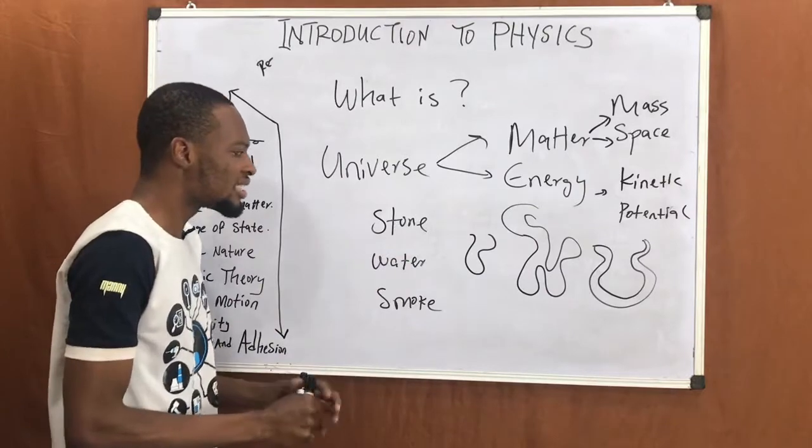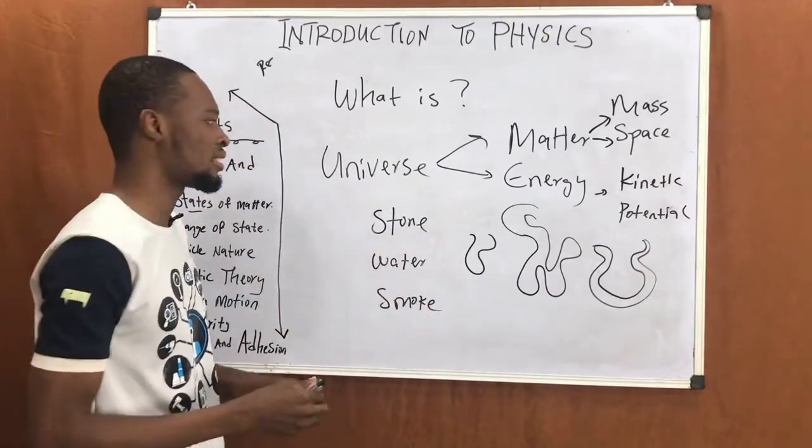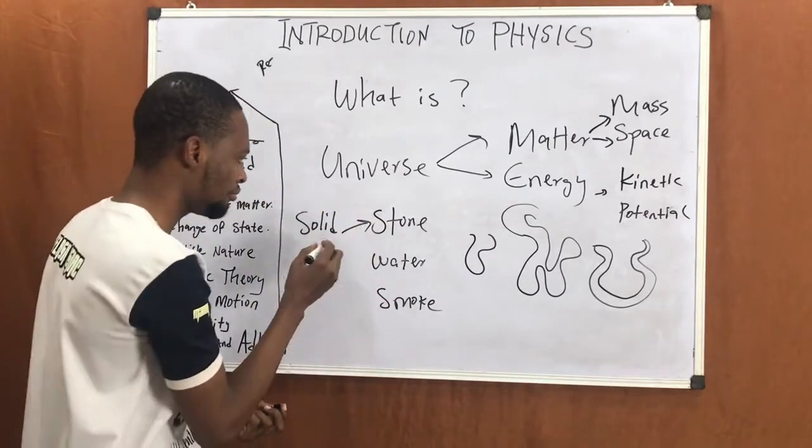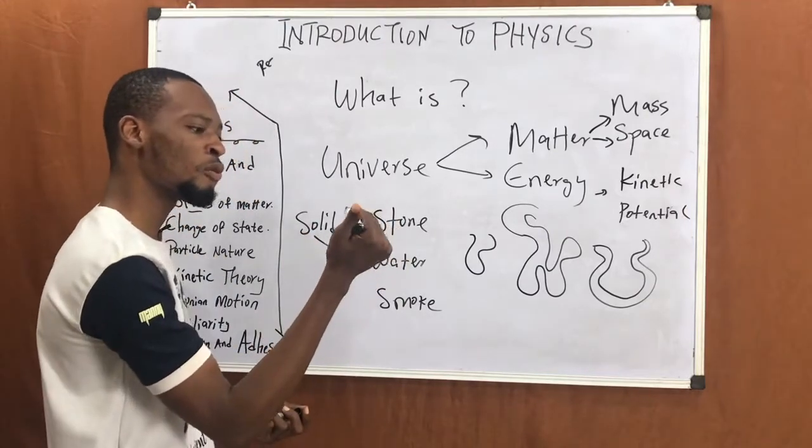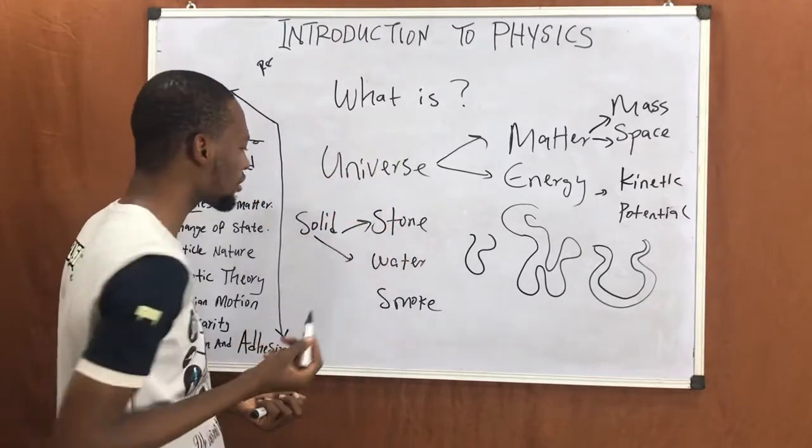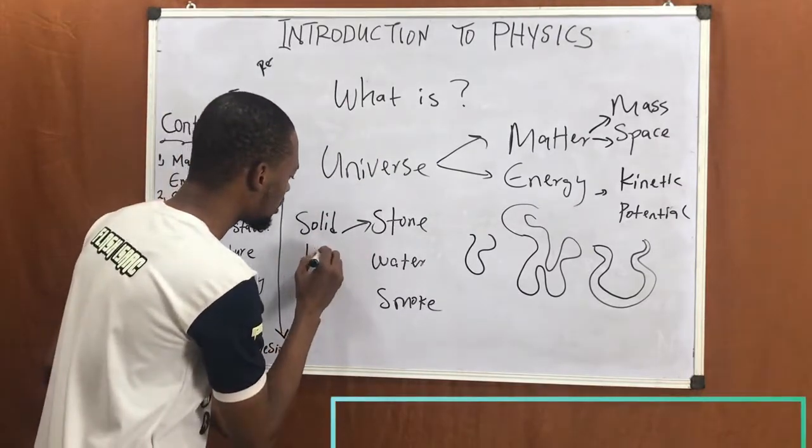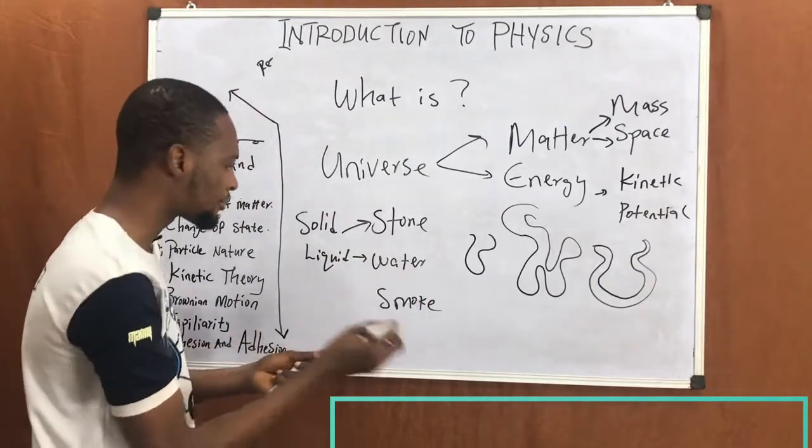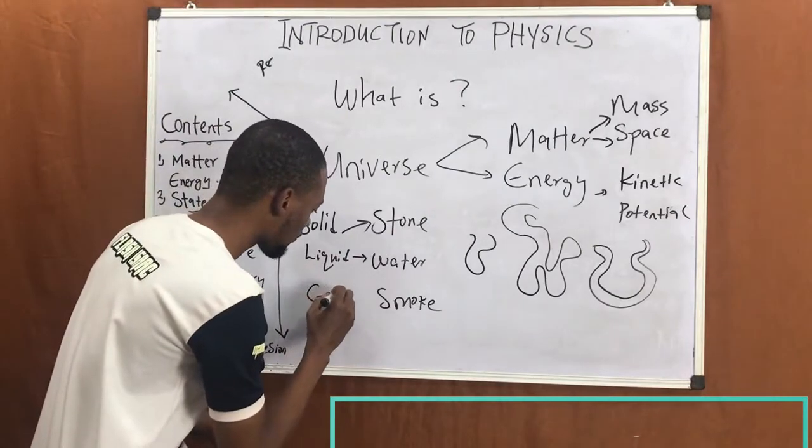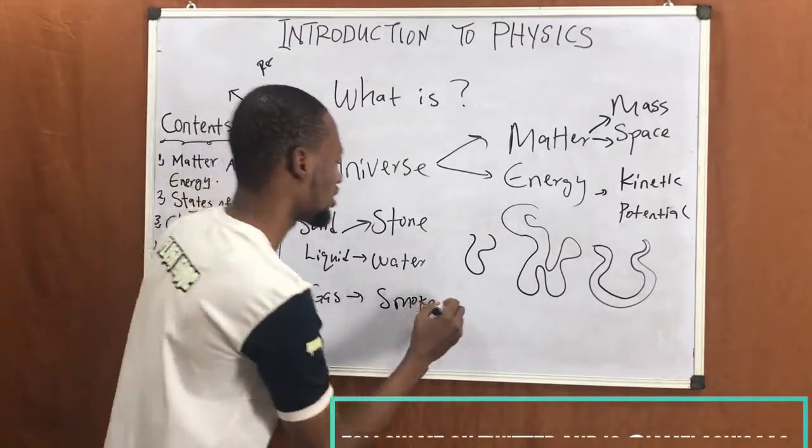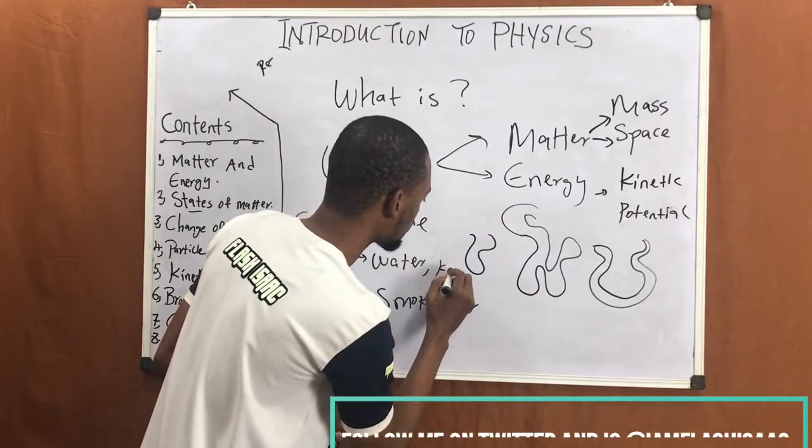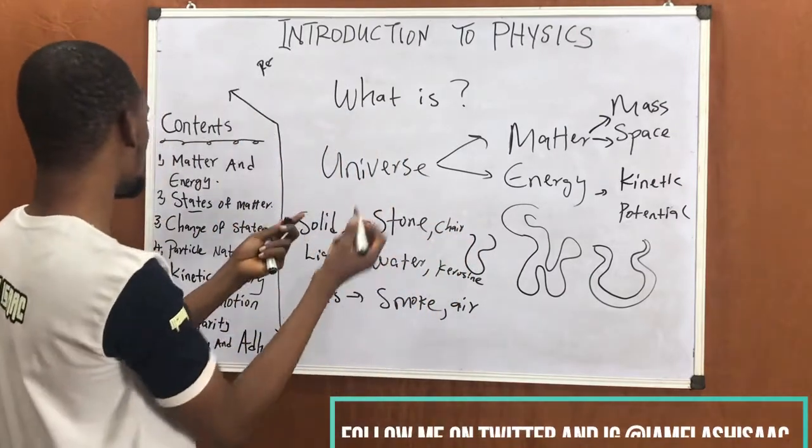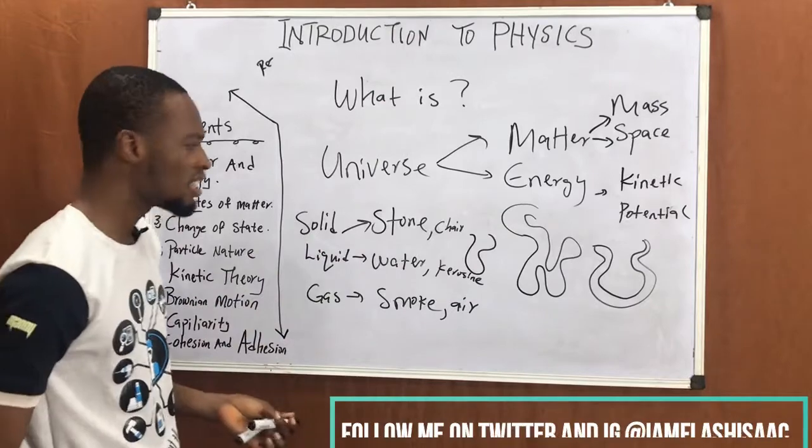These are examples of the three states of matter. Matter exists as a solid—example stone, this board, whiteboard marker, and even the board. It exists as a liquid—water, kerosene. It exists as a gas—air, smoke. That's what states of matter talks about.